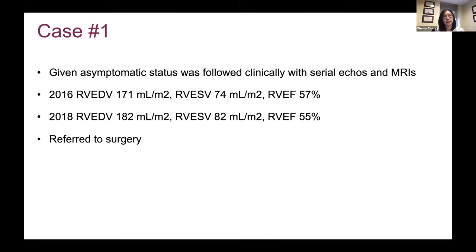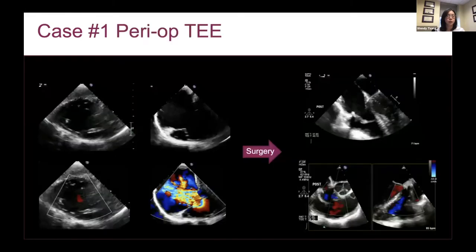His MRI values were quite stable from 2016 to 2017. Then in 2018, there was further dilatation. At that point I had a discussion with the patient and said his function is probably mildly reduced and he's starting to dilate again. At that point, he was open to going to surgery.